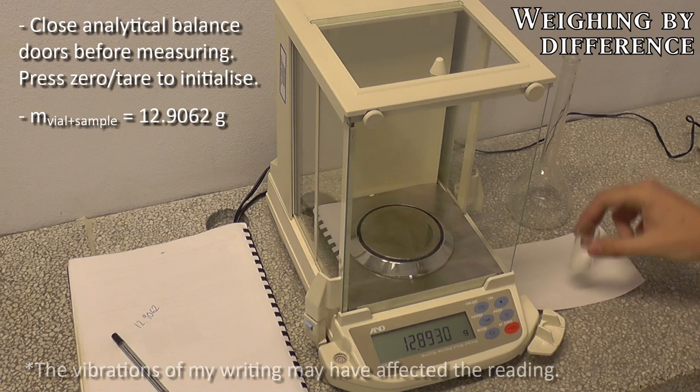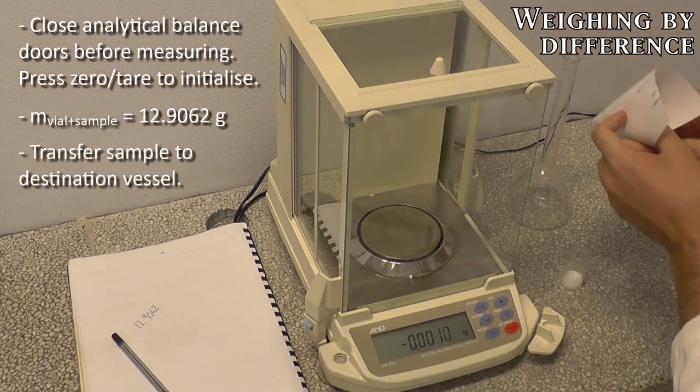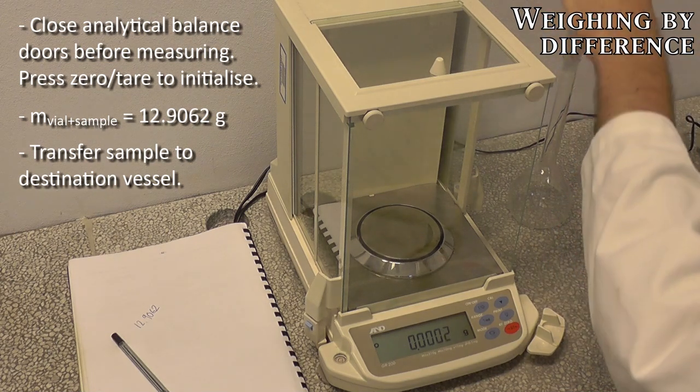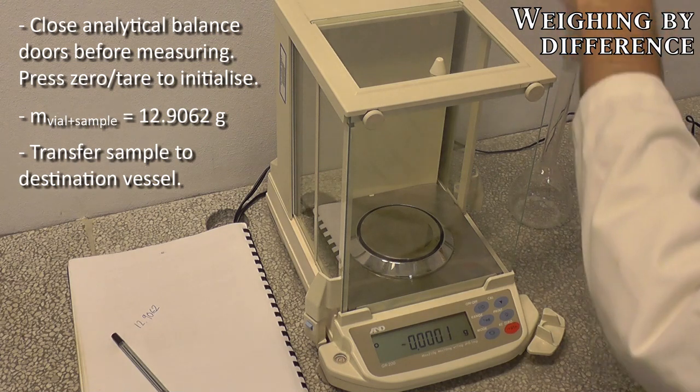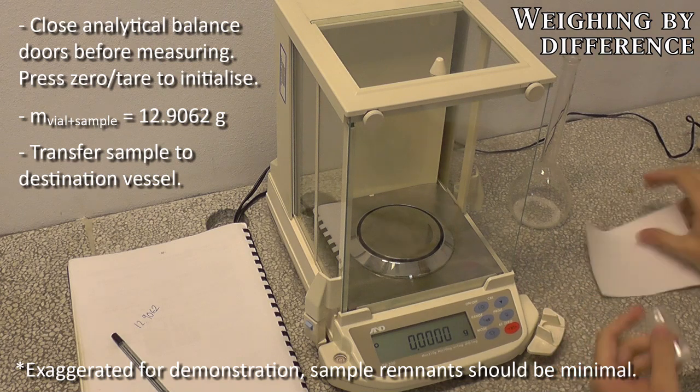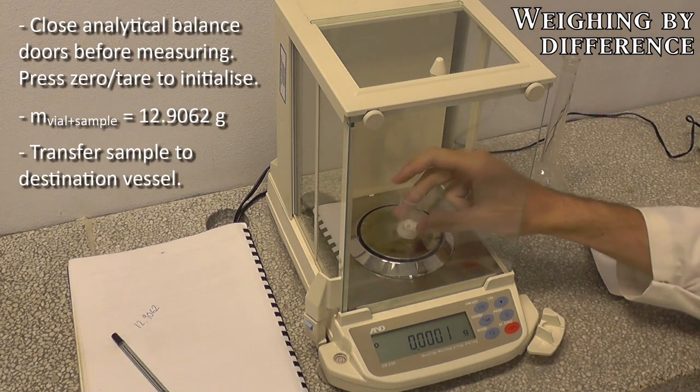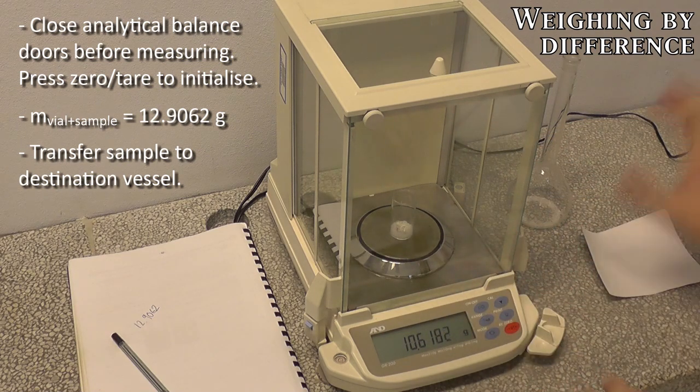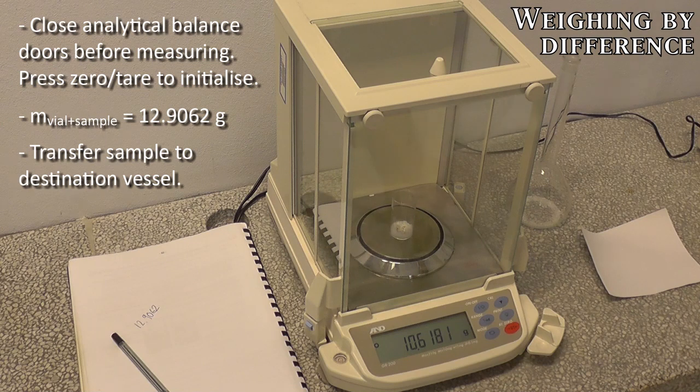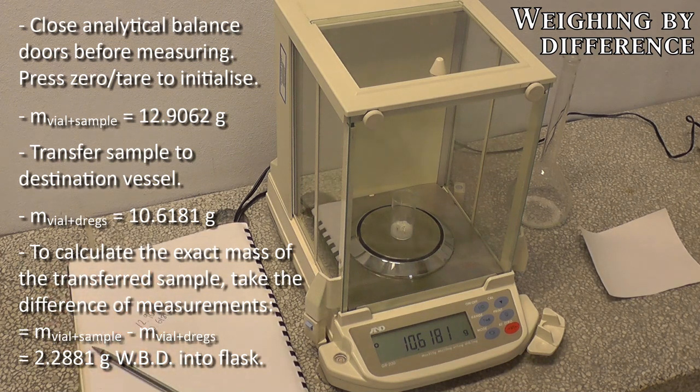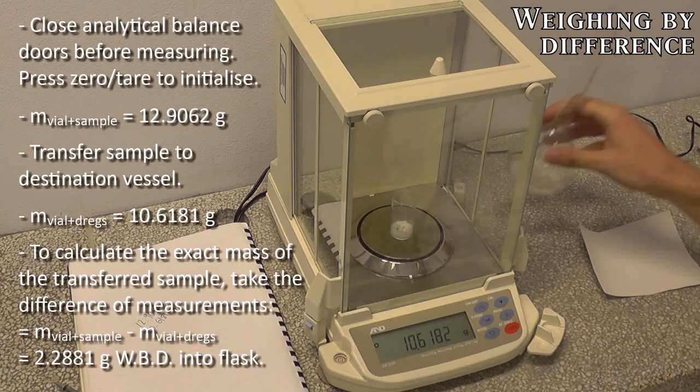Next what I'll do is I'll take my sample out, make a quick solids funnel, and transfer that solid into my destination vessel. You might notice that there is a significant amount of dregs left in here. So what I need to do now is to re-weigh the vial plus the remnants, those dregs, because those are not actually anything that I've transferred over to my reaction vessel. So re-weighing I get 10.6181 grams, and taking the difference of those two numbers will give me the exact quantity of solids I've transferred to my final reaction.